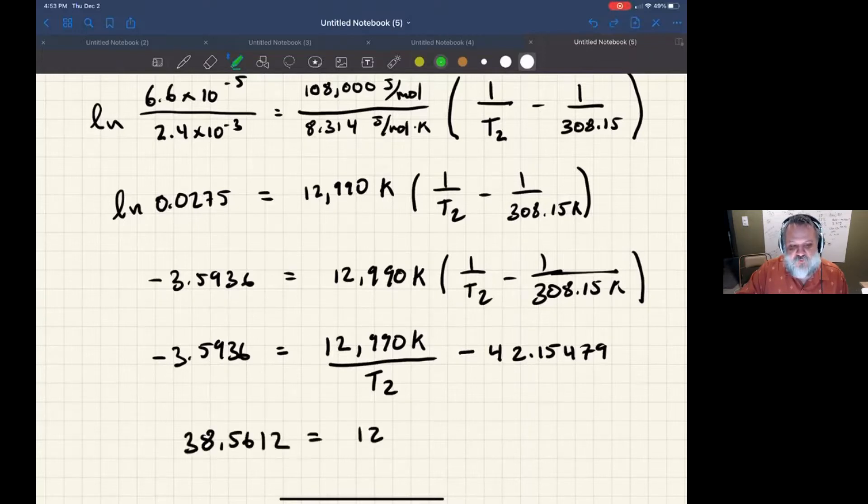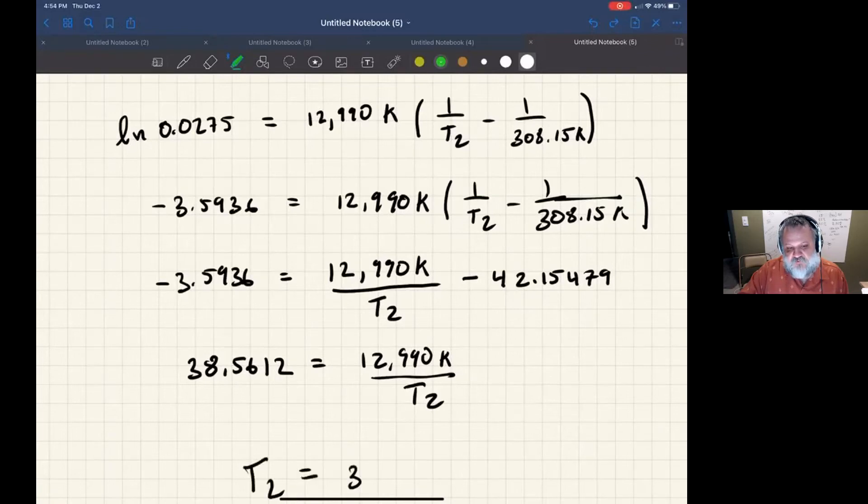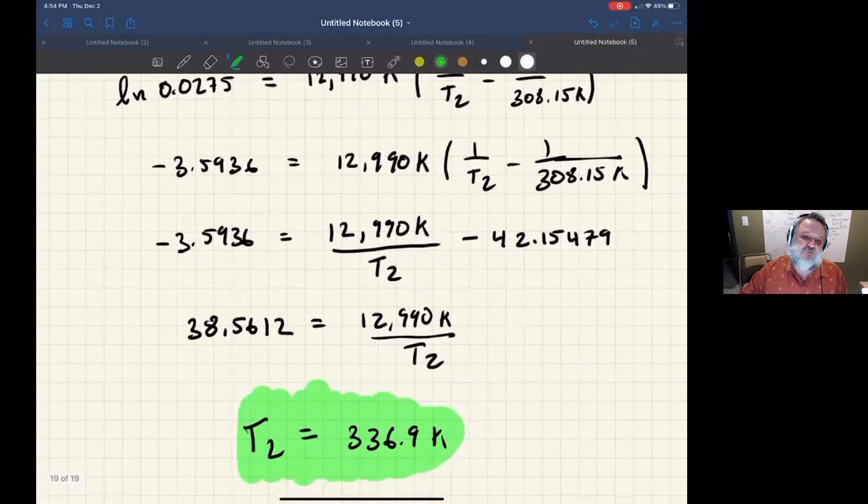We get 38.5612 equals 12,990 Kelvin over T2. Multiplying both sides by T2, then dividing by 38.5612, we get T2 equals 336.9 Kelvin. And that's the final temperature.